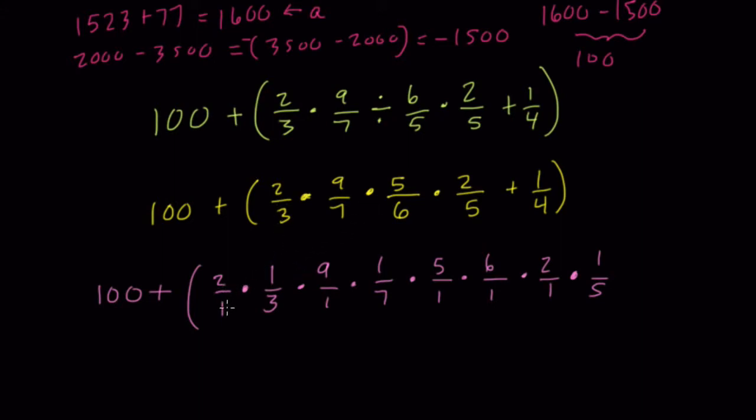So, 2 over 3 is 2 over 1, times 1 over 3. And that's two thirds. 2 times 1 is 2. 1 times 3 is 3. Two thirds. And so forth. 9 times 1 is 9. 1 times 7 is 7. 9 over 7 is 9 sevenths. 5 times 1 is 5. 1 times 6 is 6. That's 5 sixths. 2 times 1 is 2. 1 times 5 is 5. That's 2 over 5. And we have plus 1 over 4, which you can't really touch yet.